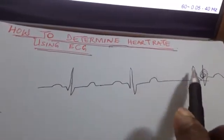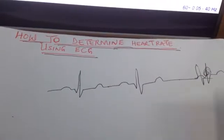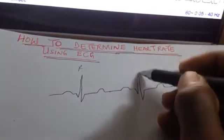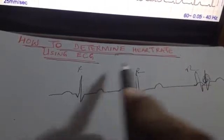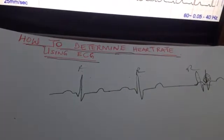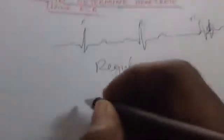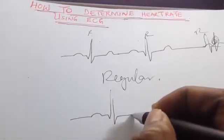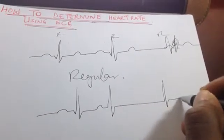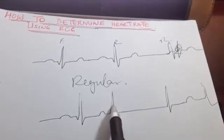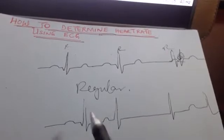The distance between each R-to-R interval has to be roughly the same for you to regard that particular rhythm as a regular rhythm. This is R, another R, another R — the distances have to be roughly equal between each successive R-to-R interval. If they are roughly equal, the rhythm is regular. But if, for example, one R-to-R distance is different from another, it is regarded as irregular.